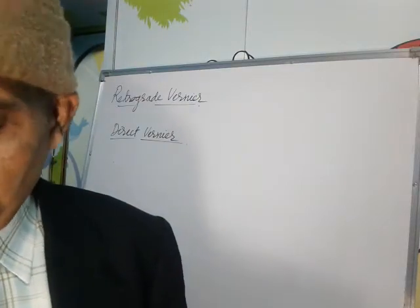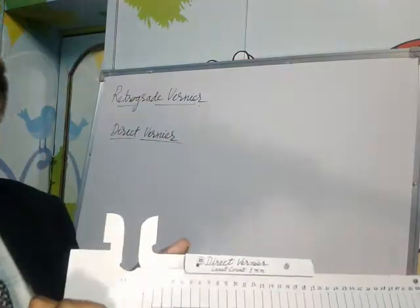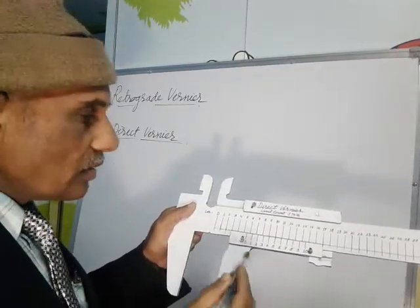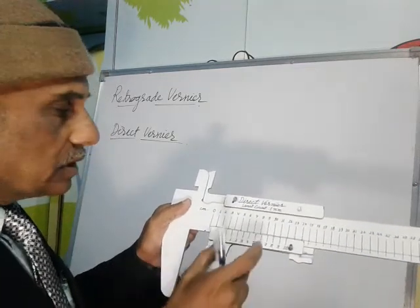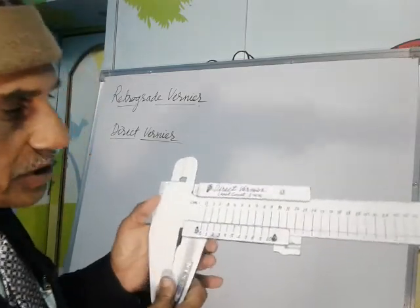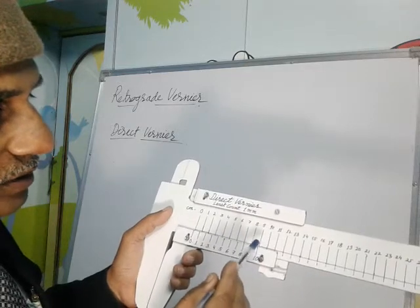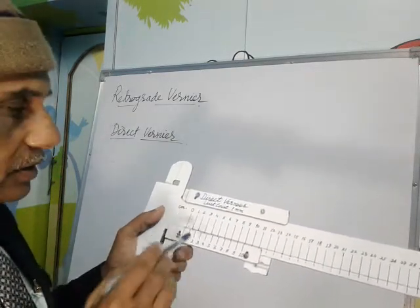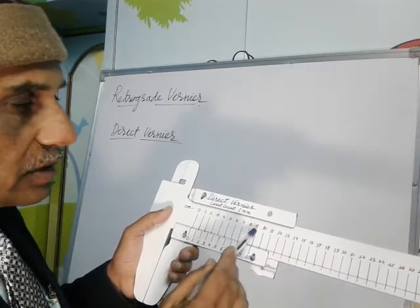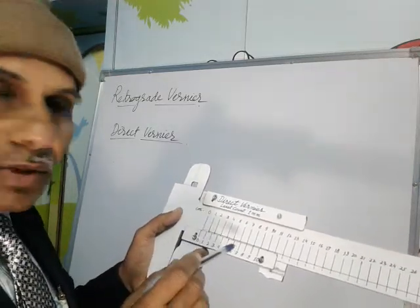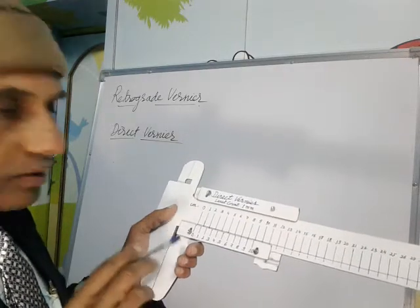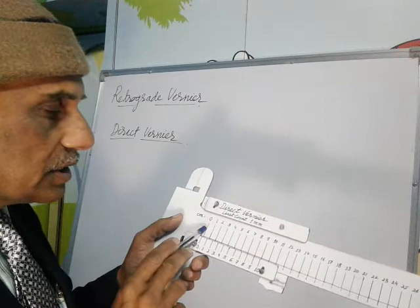Let us see how this happens. This is a model of a Vernier. On this Vernier we have some graduations. This sliding scale is known as the Vernier. 10 divisions of it are equal to 9 divisions of the main scale. This 0 coincides with this 0, and this 10 coincides with the 9th division. On this model each division is 1 cm, so 10 divisions of the Vernier equals 9 cm. The value of 1 division of the Vernier is 9 by 10, which is 0.9 cm. And 1 division of the main scale is 1 cm.